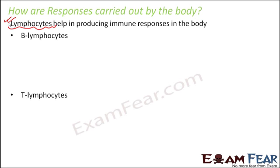B lymphocytes and T lymphocytes are also referred to as B cells and T cells. In B lymphocytes, the term B stands for Bursa of Fabricus, an organ present in birds where B cells mature. Many people think B stands for bone marrow, which is not the case — though in all vertebrates including humans, B cells are produced in the bone marrow. So B can be remembered for both Bursa of Fabricus and bone marrow.